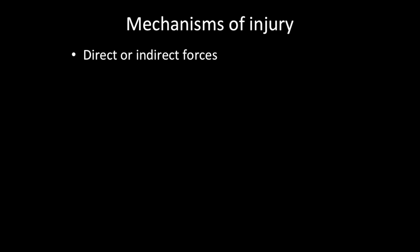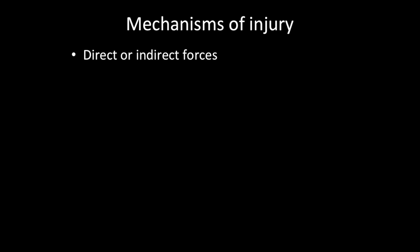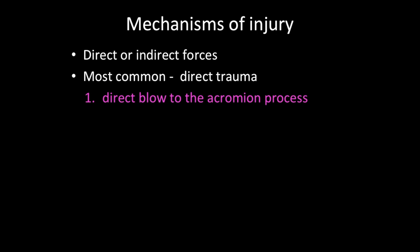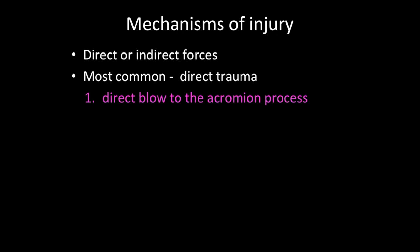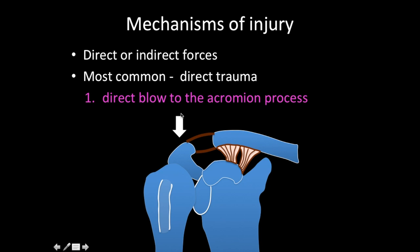AC joint injuries can occur from direct or indirect forces. Direct forces involve a direct trauma onto the AC joint — for example, a direct blow to the acromion process, which causes the acromion to shift inferiorly, resulting in tearing of the acromioclavicular ligaments. With greater force, there is also an inferior force acting on the scapula and coracoid process — the entire scapula with the coracoid shifts inferiorly, resulting in tearing of the coracoclavicular ligaments.